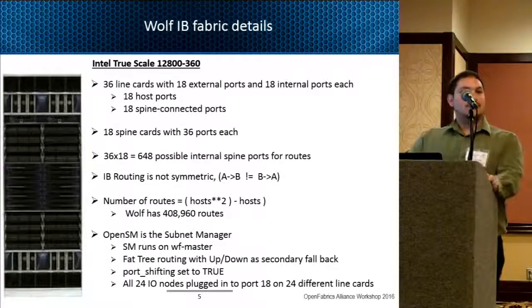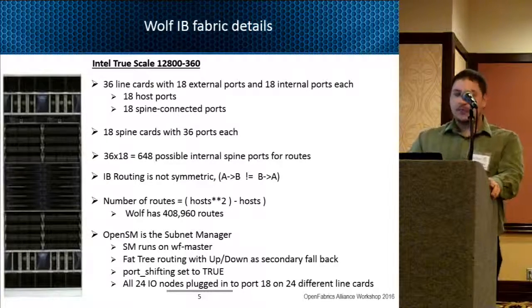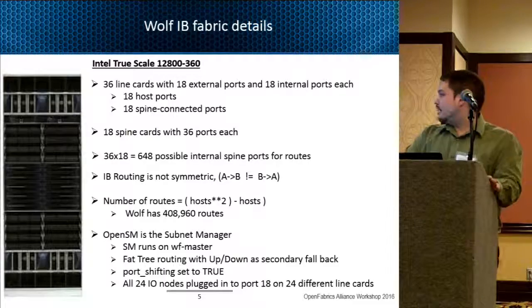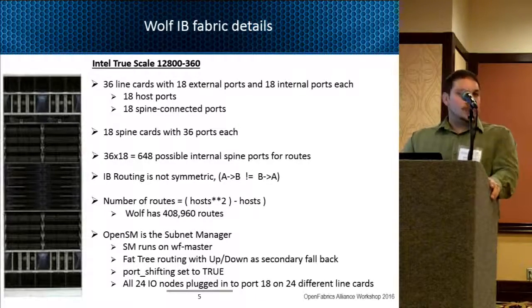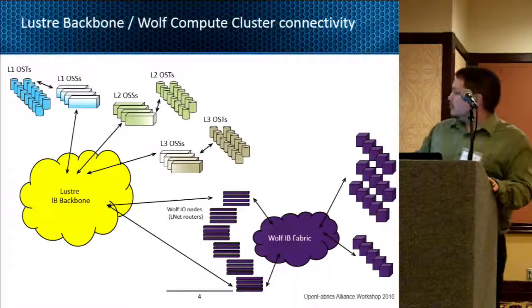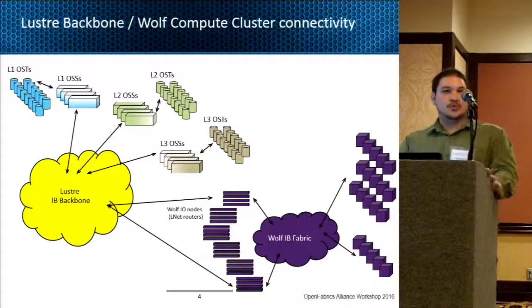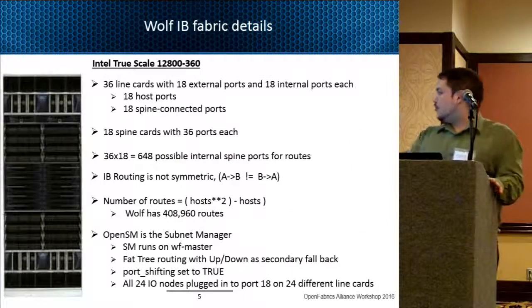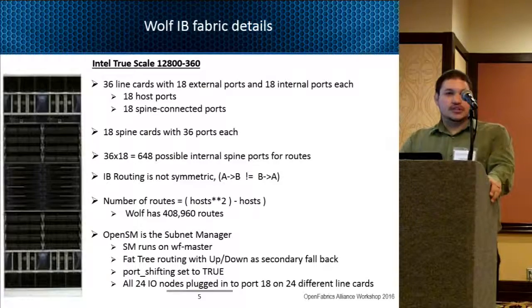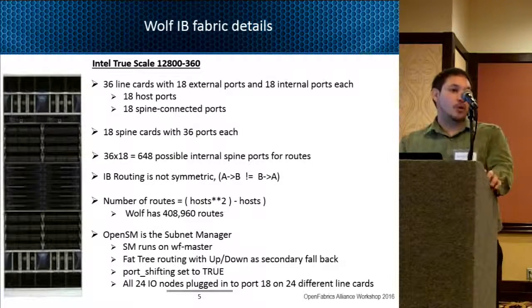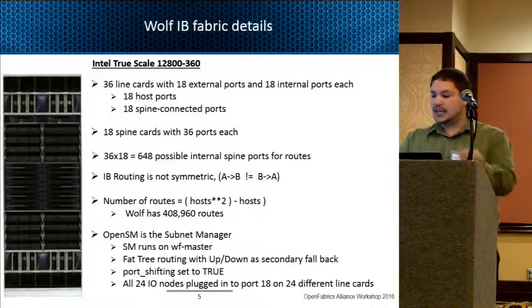By default we had port shifting enabled to true, though I'll explain why that wasn't a huge factor for our testing. One important note is that on this fabric we have 24 IO nodes connected between Wolf and the Lustre file system fabric. Each of those 24 IO nodes were connected to 24 separate leaf switches on the Wolf fabric. Importantly, they were all in the same port on those different line cards — in this case port 18.